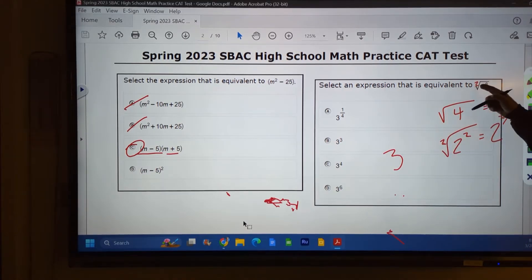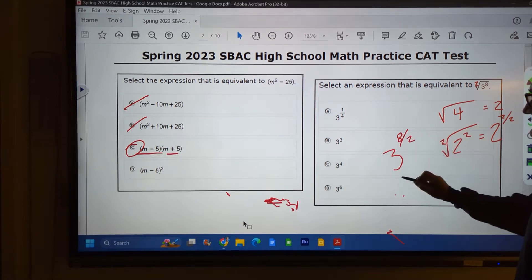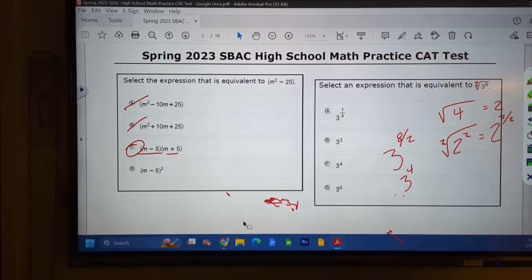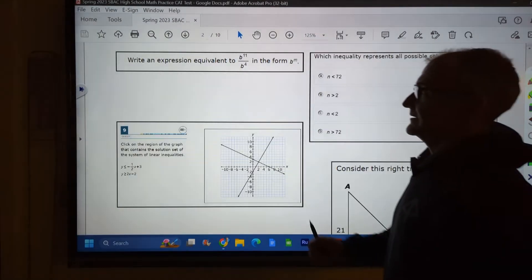So I'm going to use that kind of discovery to solve this problem here. I have 3 to the 8th. And this is a square root. So it is to the power of 8 over 2. I could reduce that fraction to 3 to the 4th. And there's my correct answer, Answer C right there.